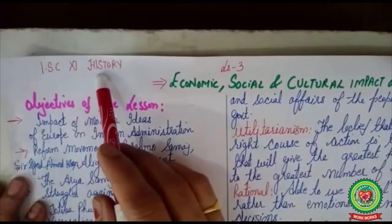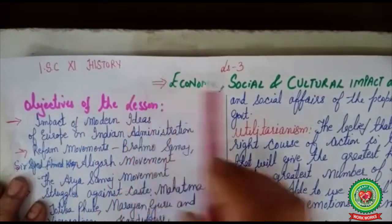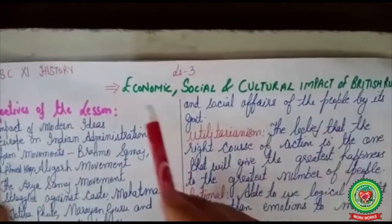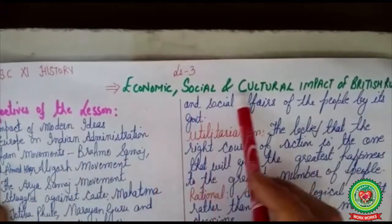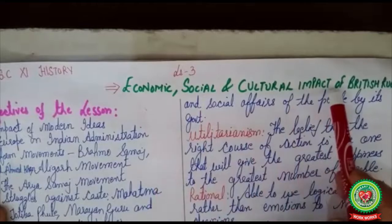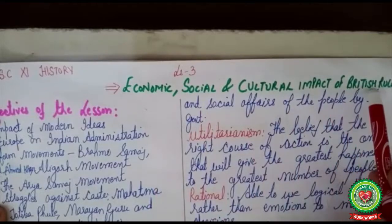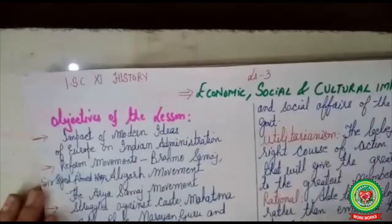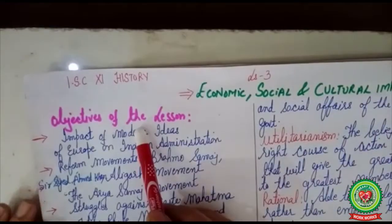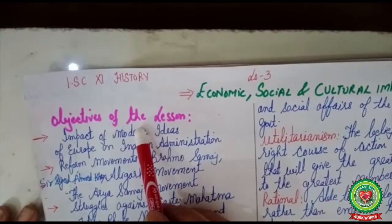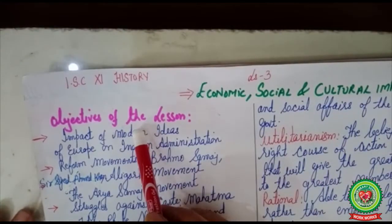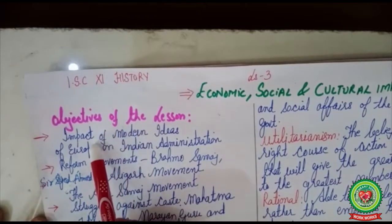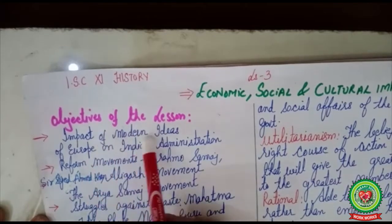Welcome to ISE Plus One history class. Today we are going to start Lesson 3: Economic, Social, and Cultural Impact of British Rule. First, we will go through the objectives of the lesson.